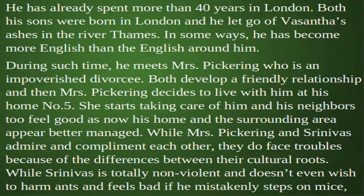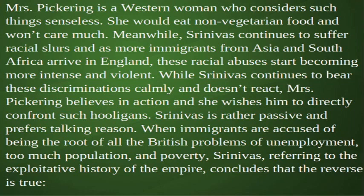In some ways, he has become more English than the English around him. During such time, he meets Mrs. Pickering, who is an impoverished divorcee. Both develop a friendly relationship and then Mrs. Pickering decides to live with him at his home, No. 5. She starts taking care of him and his neighbors too feel good as now his home and the surrounding area appear better managed. While Mrs. Pickering and Srinivas admire and compliment each other, they do face troubles because of the differences between their cultural roots. While Srinivas is totally non-violent and doesn't even wish to harm ants and feels bad if he mistakenly steps on mice, Mrs. Pickering is a Western woman who considers such things senseless.